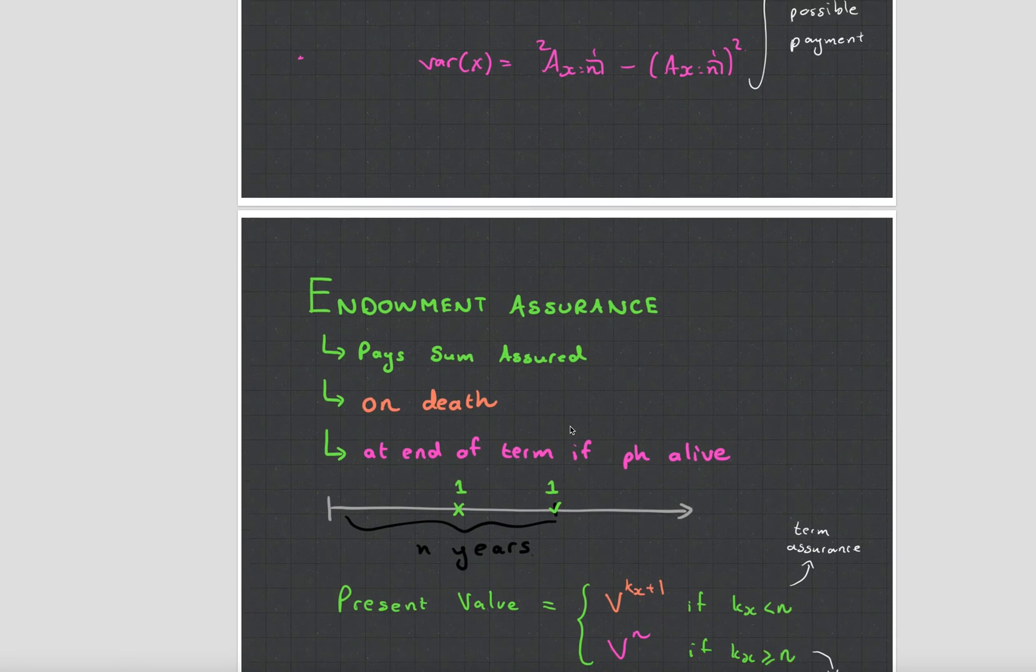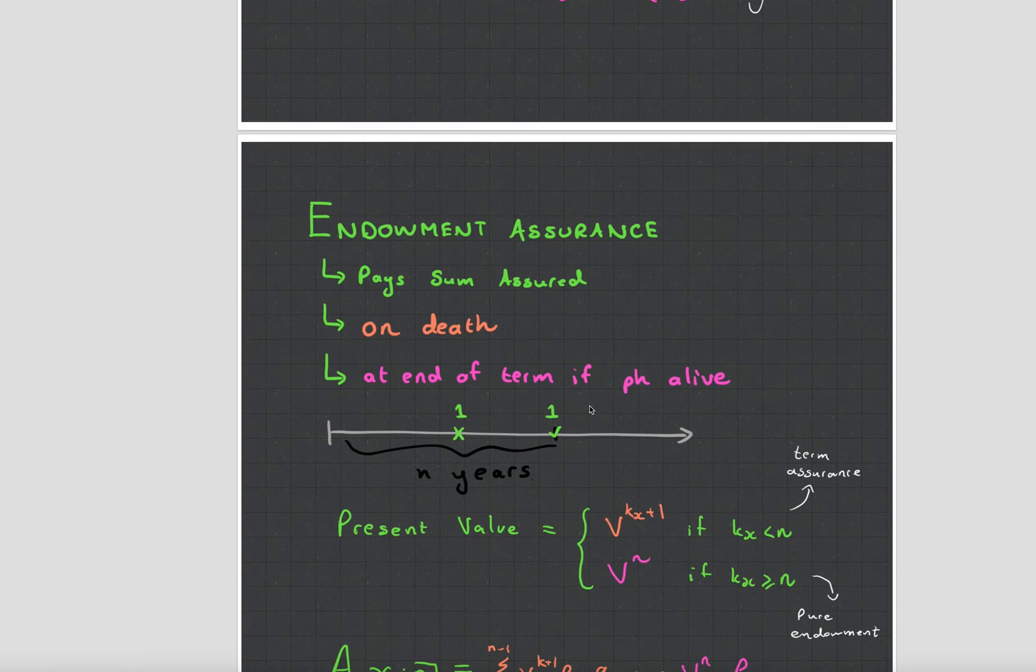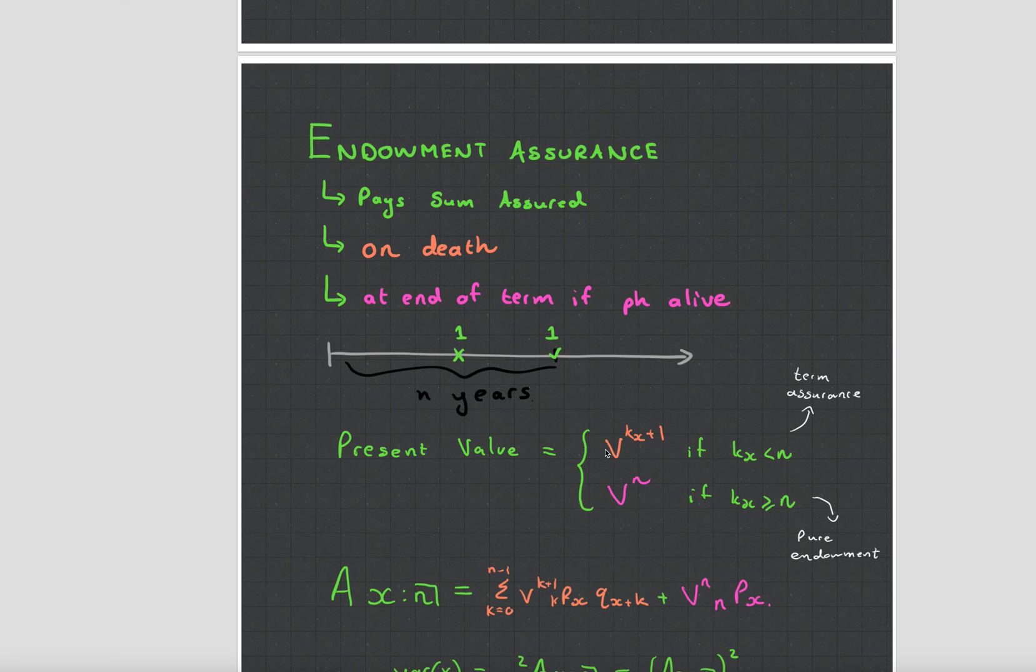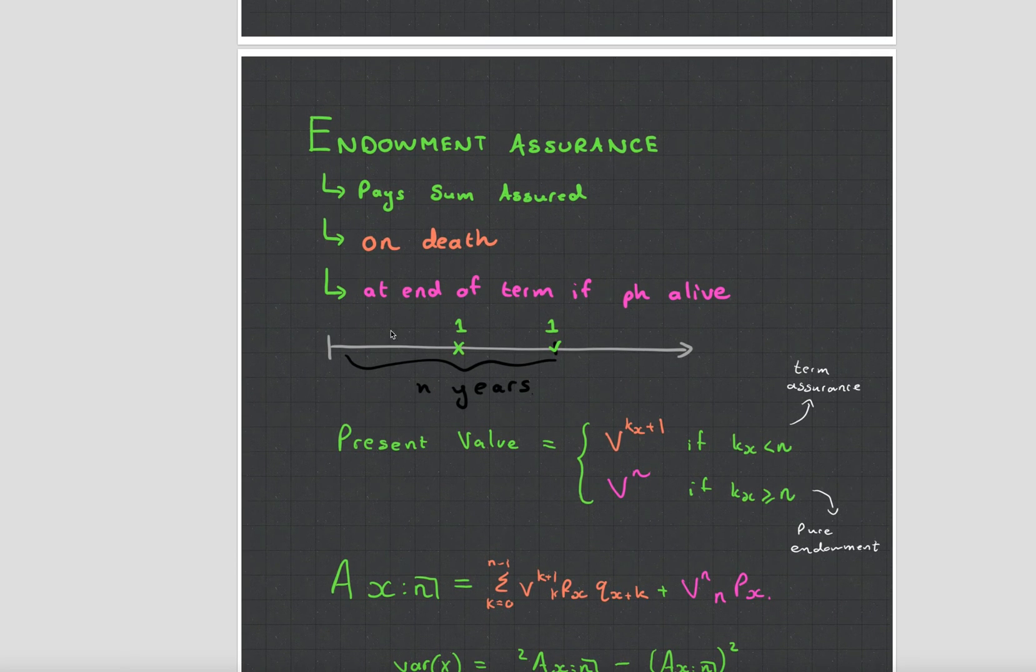And then you have something known as the endowment assurance which I've already mentioned. It is the combination of the term assurance represented in orange and the pure endowment which is represented in pink. Now in my opinion this is a really dumb product because what this is saying is that if you die within a period we'll give you some money and if you survive to a period we'll give you some money. It's a mix of a risk product and a saving product which like I said I think is kind of dumb. Yet funnily enough people like buying this product. It actually sells quite well in the marketplace.